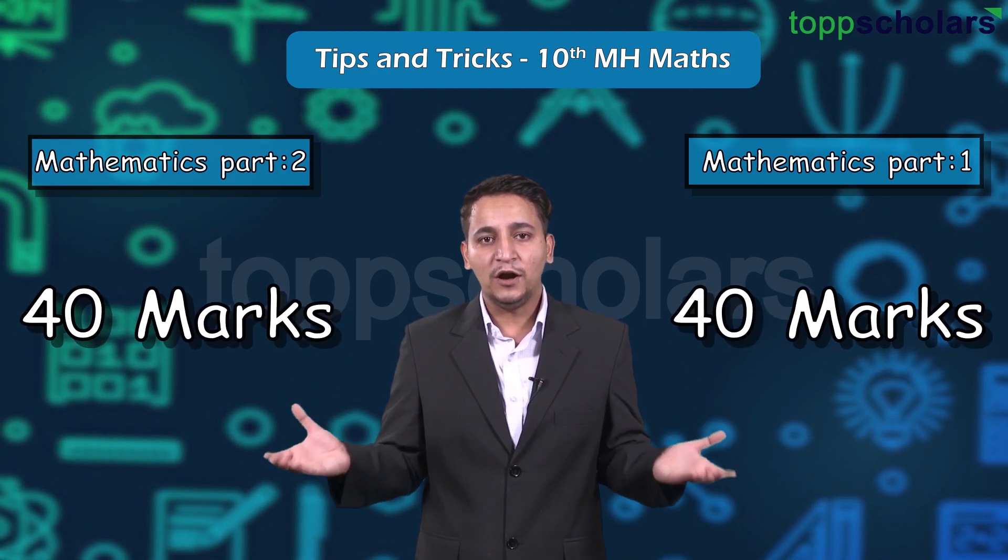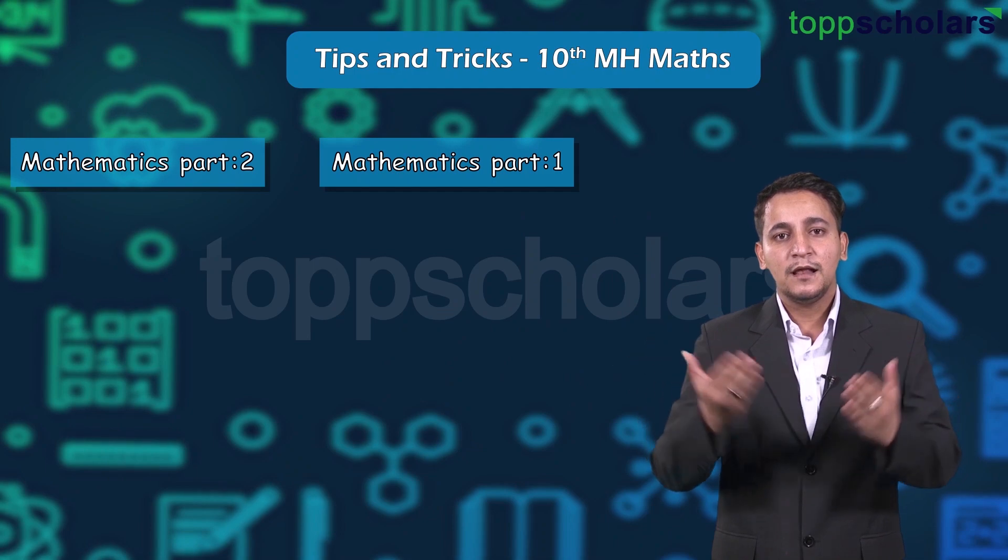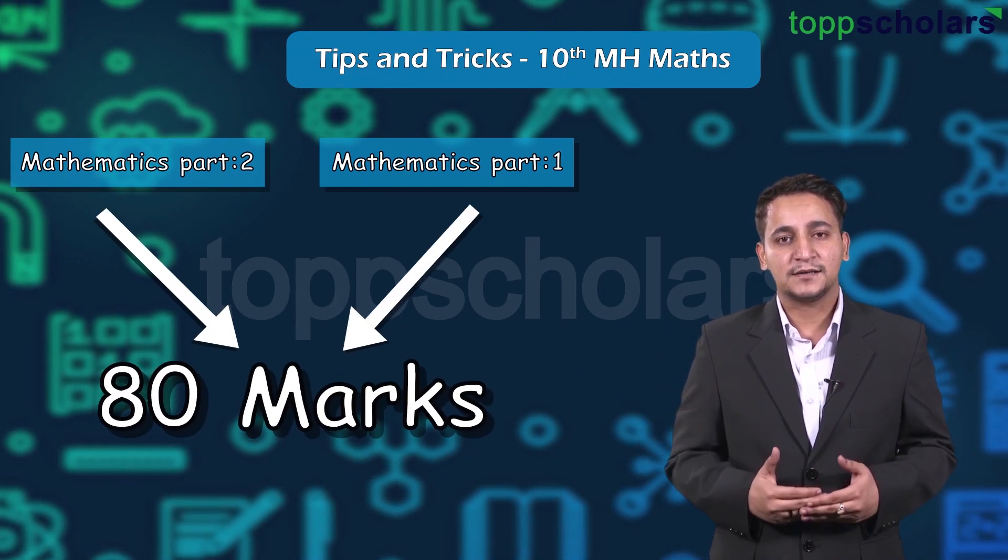The 10th MH mathematics written paper is divided into two parts: mathematics part 1 and mathematics part 2. Both of these two parts constitute 40 marks each, totaling 80 marks.